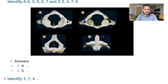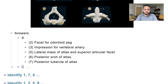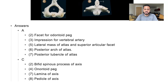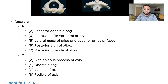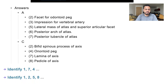On part A: facet for the odontoid peg, impression of the vertebral artery, lateral mass of the atlas, posterior arch of the atlas, posterior tubercle of the atlas. Then: bifid spinous process, odontoid peg, number 7 is the lamina, and number 8 is the pedicle for the axis.